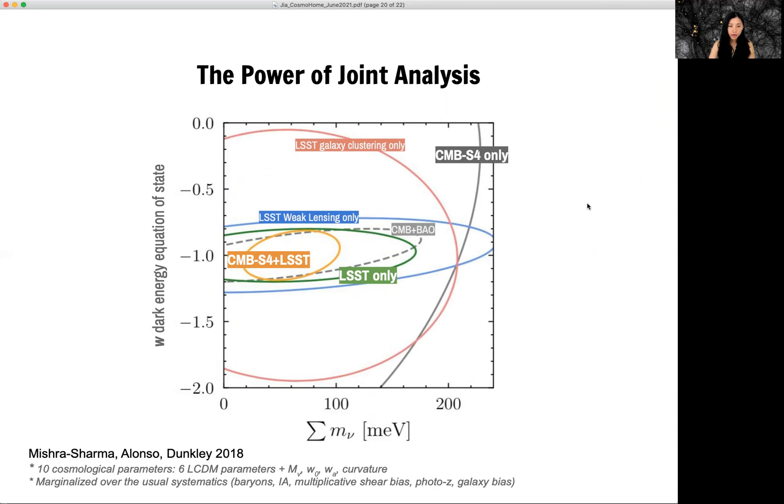Here is a forecast for the next generation surveys. If we use CNBS4 only, we get this gray contour. If we use LSST galaxy, you can get this pink contour.